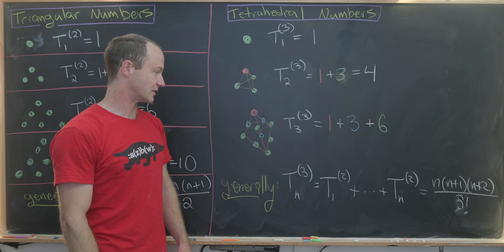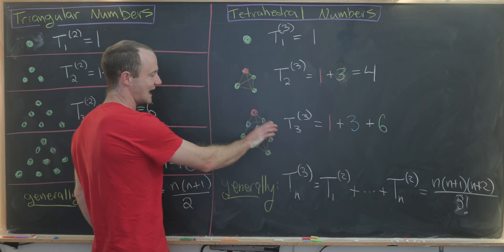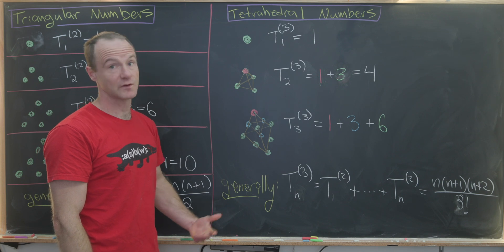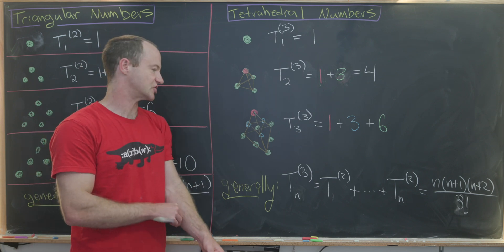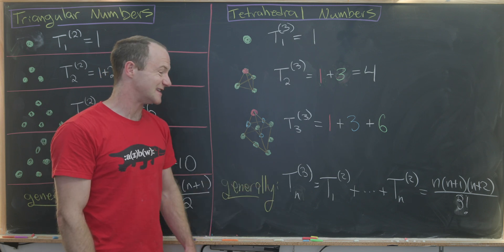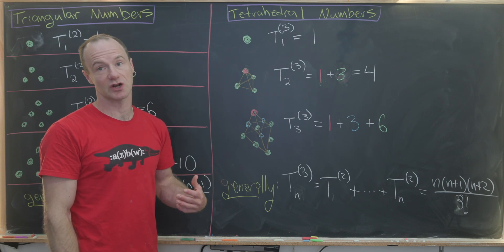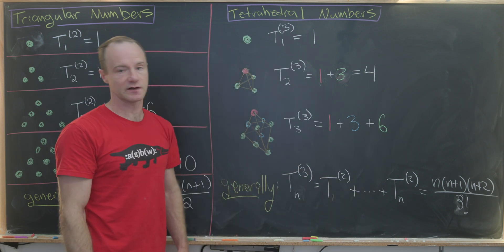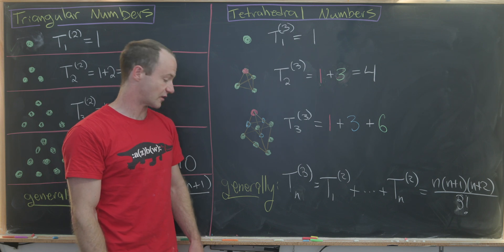The third tetrahedral number is built with a base triangle that is the third triangular number — six, in green — then the second triangular number, three, in blue, and then the apex is the first triangular number, one. So T₃ equals one plus three plus six. In general, the nth tetrahedral number is built by summing all triangular numbers from the first up to the nth. This has a closed form of n times (n+1) times (n+2) over three factorial.